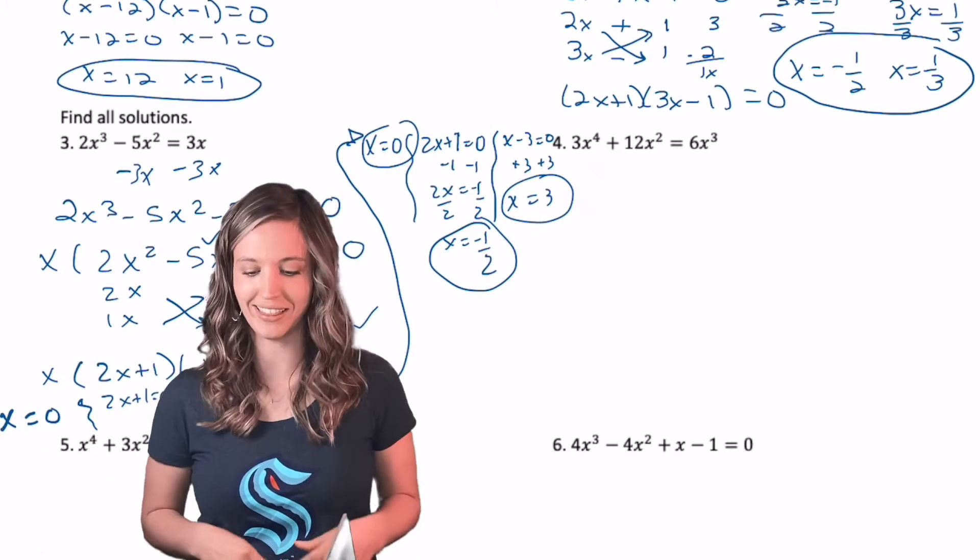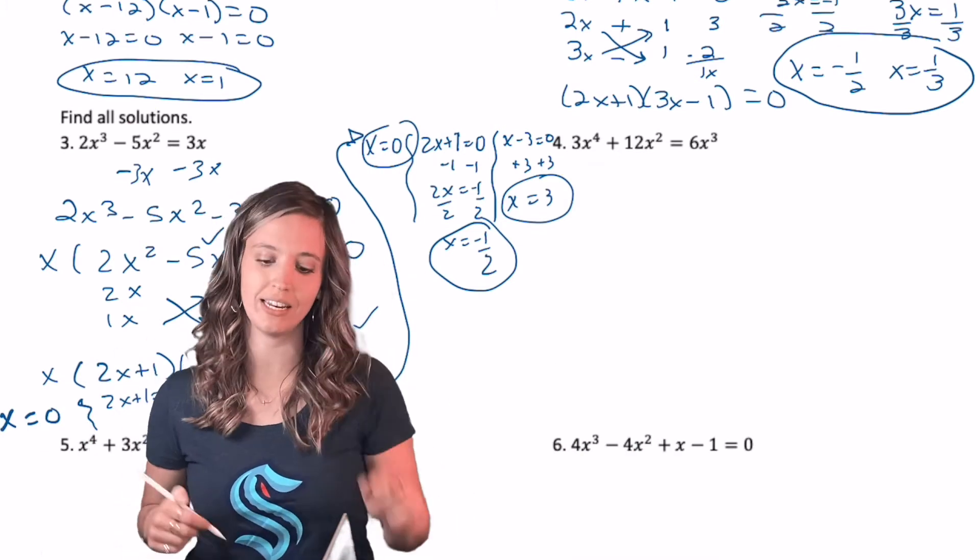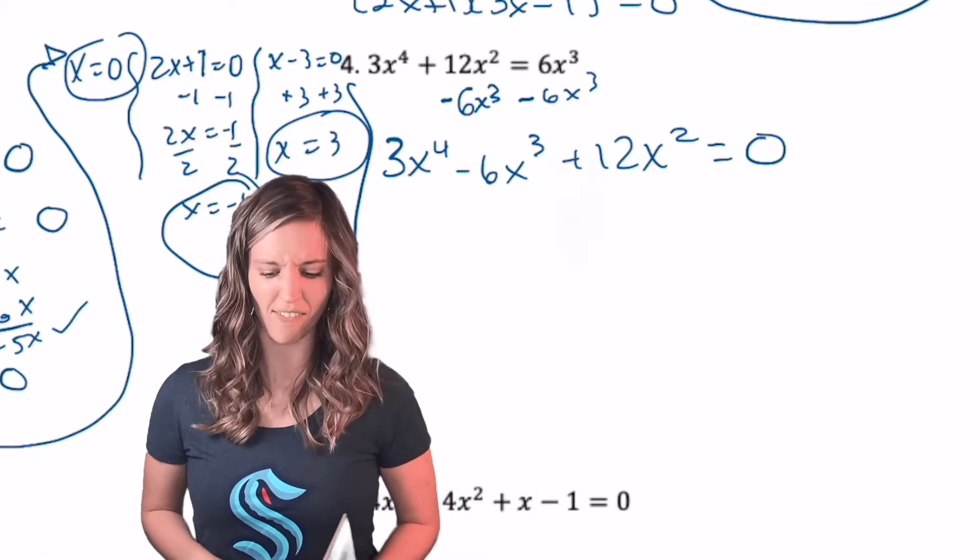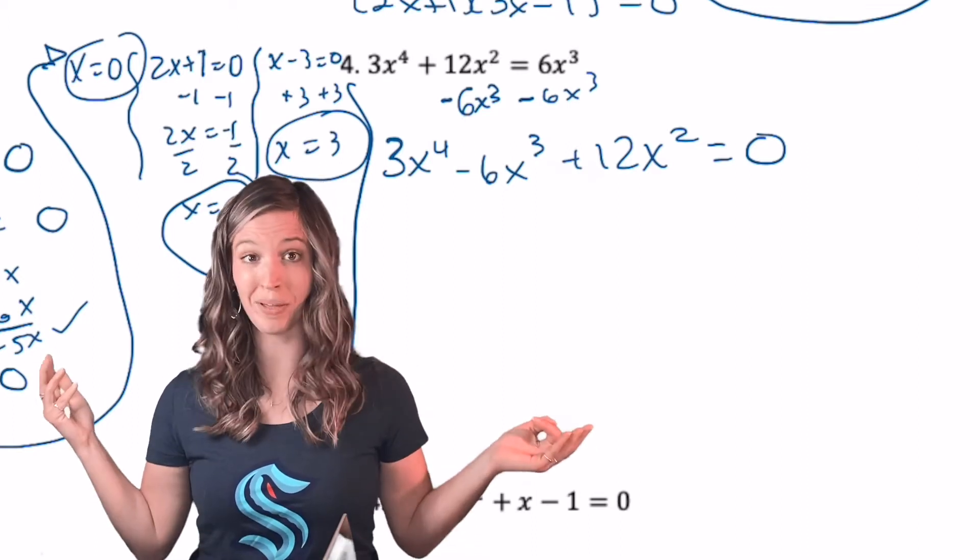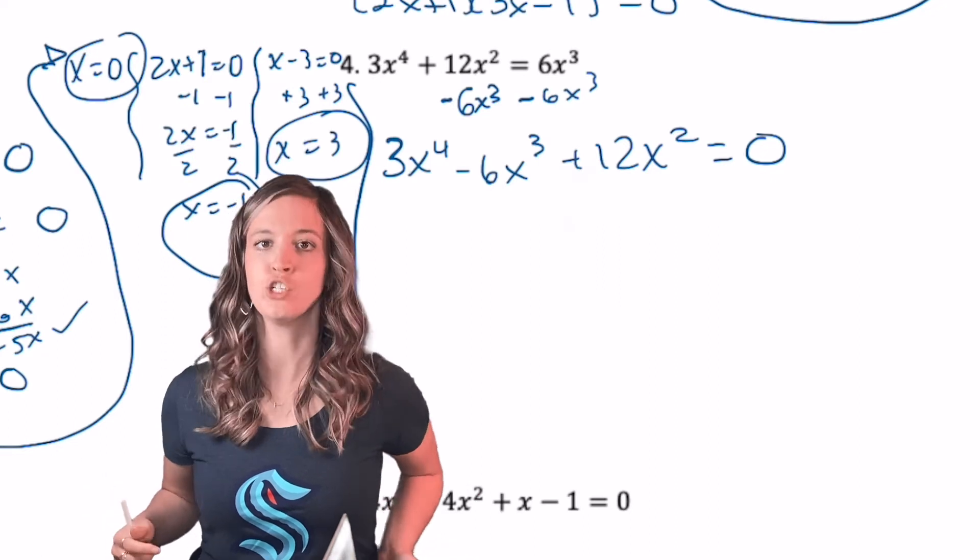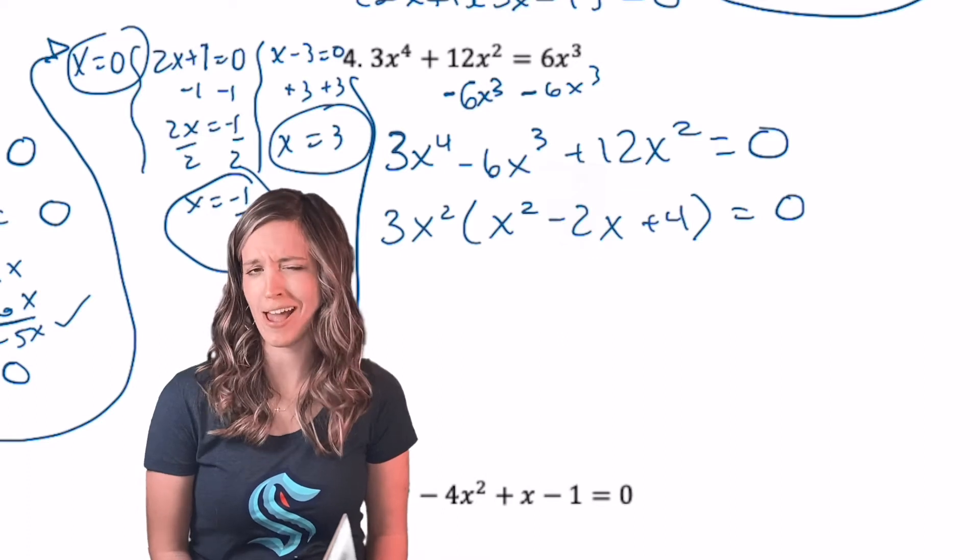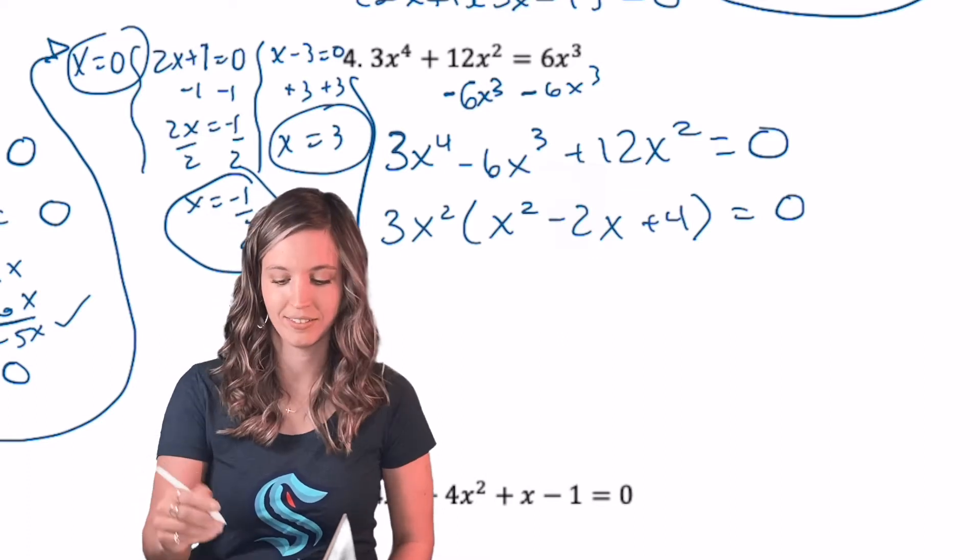Let's try another one. This time we have a quartic not set equal to zero. Get it set equal to zero. Okay, I've got a quartic, but look at all that I have in common there. I've got a three in common and an X squared in common. Let's GCF this. After I pull out the GCF, can I factor it any further? Oh yeah, I have a quadratic left behind. Whoa, this quadratic doesn't factor.